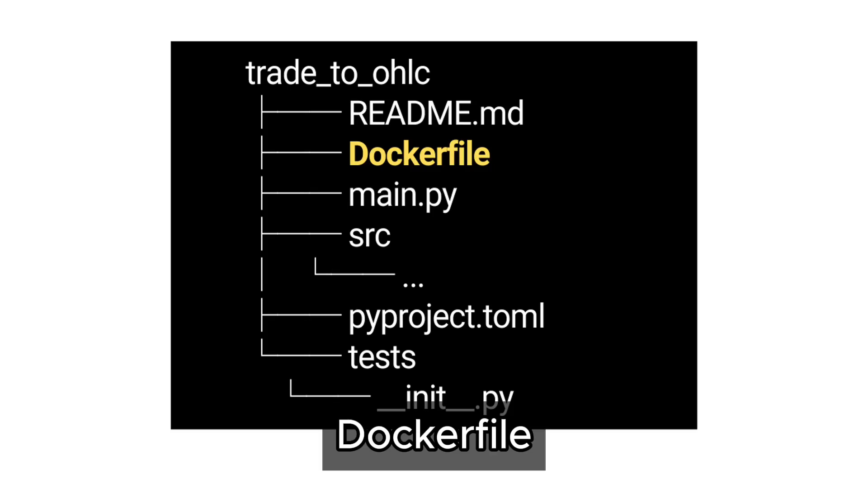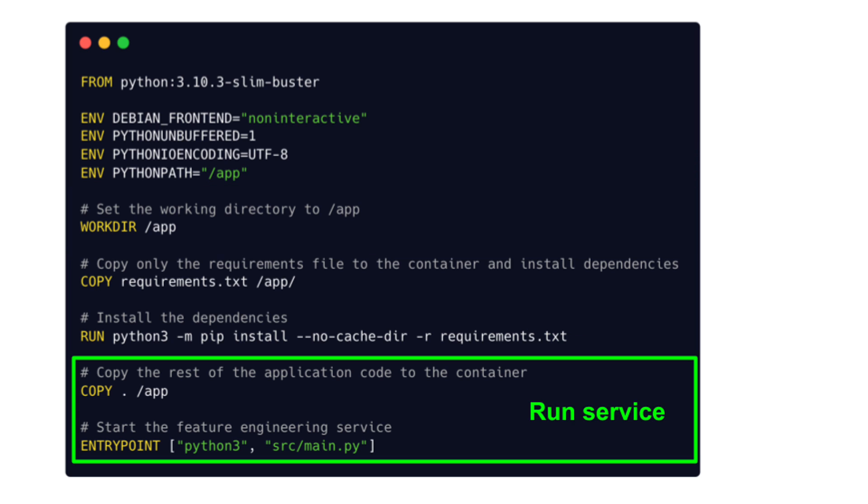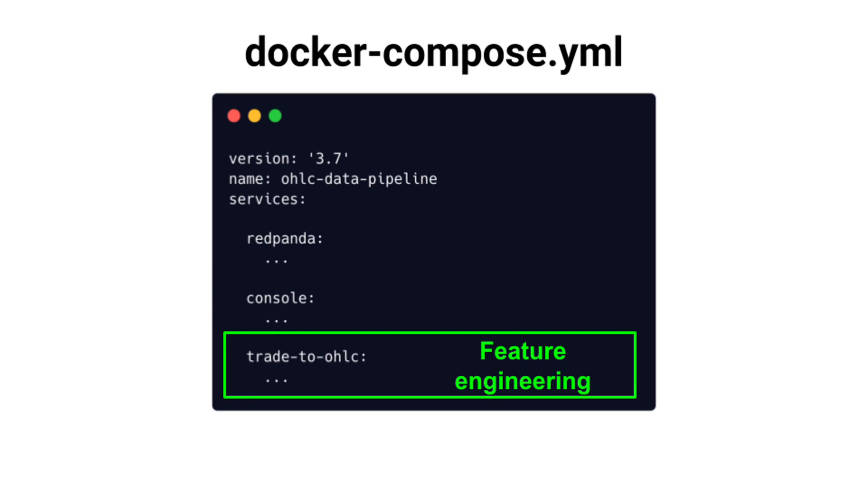Your feature engineering script now runs locally, but you need one more step — step four: dockerize your service. It's not enough to run this locally; you need to make sure it works as expected once deployed to production. Create a Dockerfile with a base layer, set environment variables, install dependencies from requirements.txt, copy the rest of the code, and start the application. From this Dockerfile you can build a Docker image with 'docker build' and run the containerized service with 'docker run'. You can also add this as a service inside your Docker Compose file, so 'docker compose up' spins up everything: the RedPanda cluster, the trade producer, and the feature engineering service.